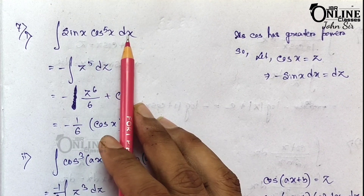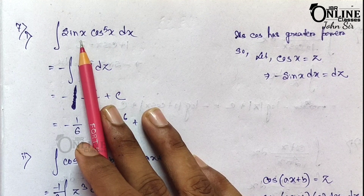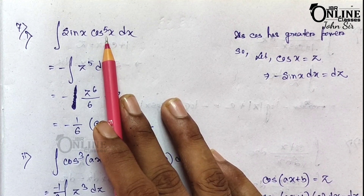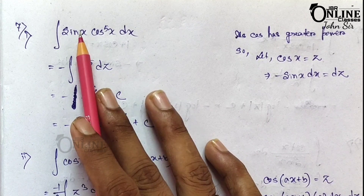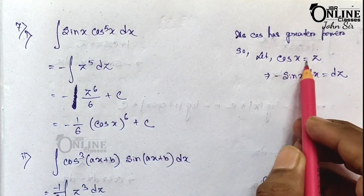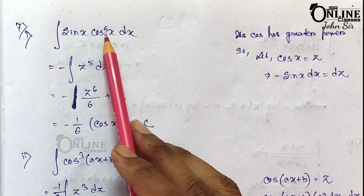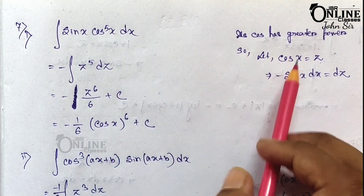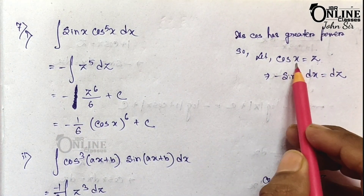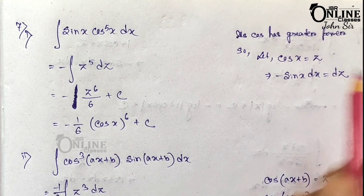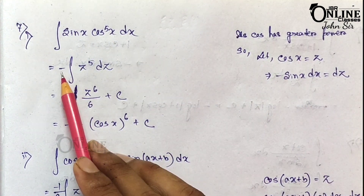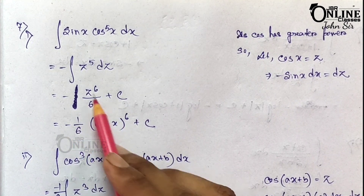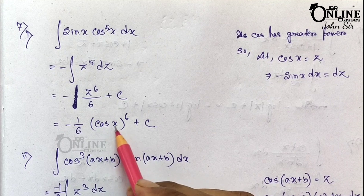Problem 7.1: ∫sin x · cos⁵x dx. When both sin x and cos x appear, the one with the greater power should be taken as z. Here cos has power 5 and sin has power 1, so let cos x = z. Then −sin x dx = dz, so sin x dx = −dz. The integral becomes −∫z⁵ dz = −z⁶/6 + C = −cos⁶x/6 + C.